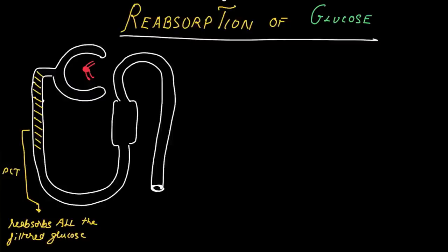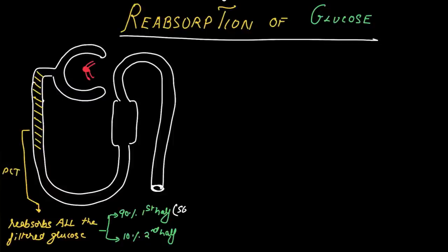90% of filtered glucose is reabsorbed in the first half of the proximal tubule by the carrier SGLT2, or sodium-glucose co-transporter 2. And 10% is reabsorbed in the second half of the proximal tubule by SGLT1, or sodium-glucose co-transporter 1.